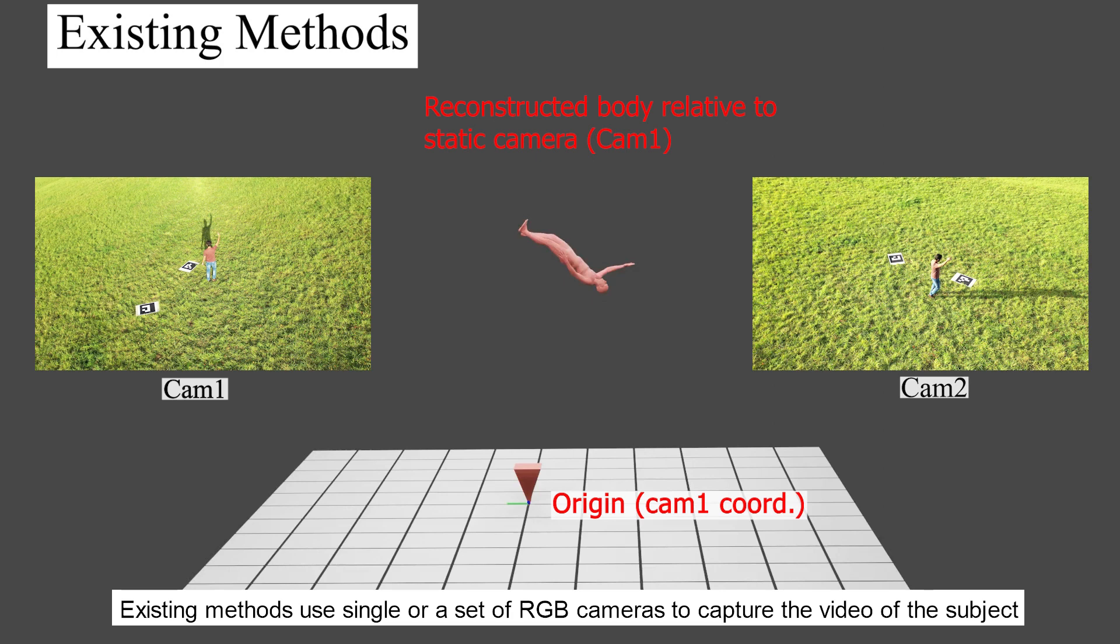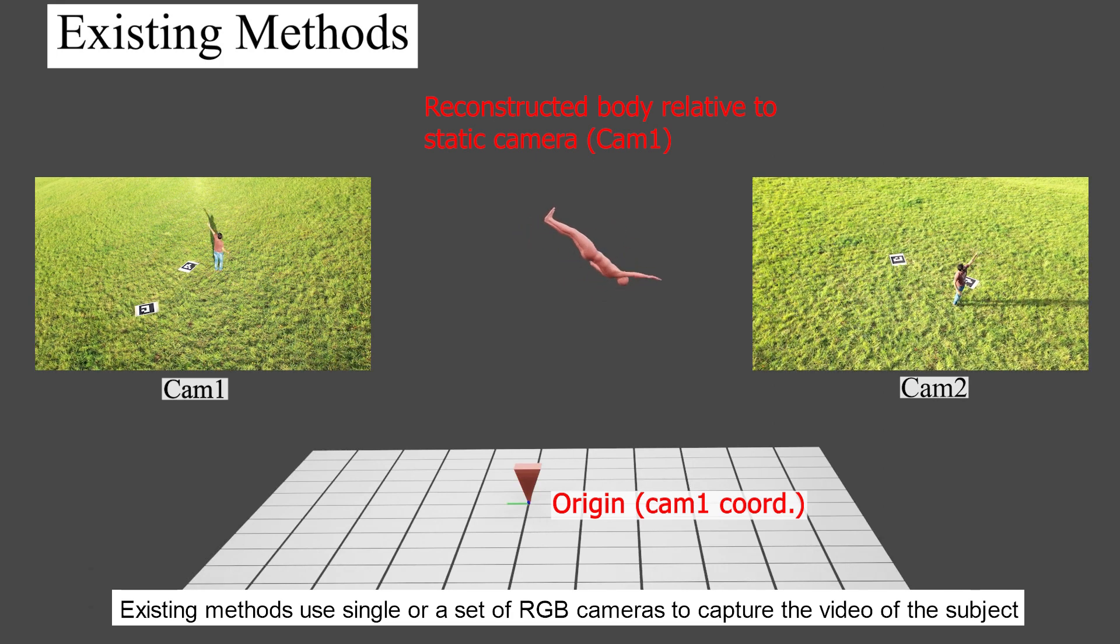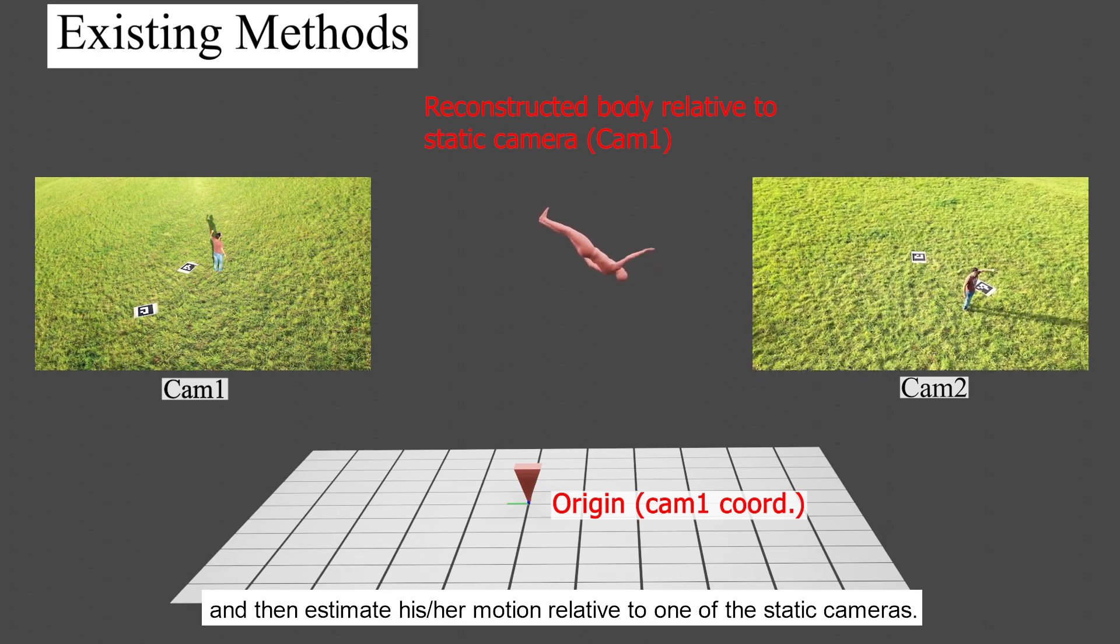Existing methods use single or a set of RGB cameras to capture the video of the subject and then estimate his or her motion relative to one of the static cameras.